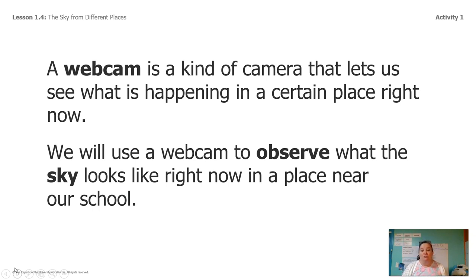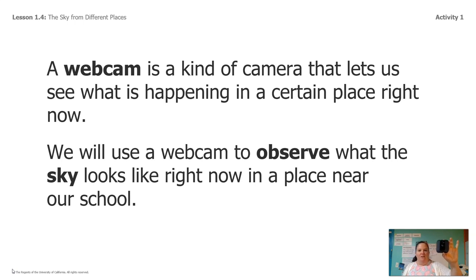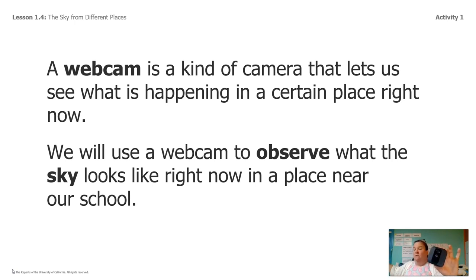In order to travel all around the world at the same time, we're going to use something called a webcam. This little thing right here is a webcam, and that's how we're going to see what the sky looks like in different places all over the world. You can go on the internet and look up just about any place you want and you can probably find a webcam. It shows whatever's going on in that place in the world right now. I have some examples here, but I have a feeling you guys might have other places you want to see, so I'll show you how you can do this on your own as well.